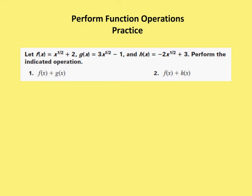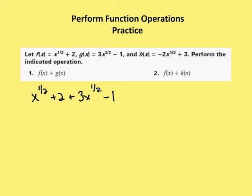Now we're going to use addition as one of the operations, and then we'll get into composition of functions in just a bit. So f of x plus g of x, where f of x is equal to x to the 1 half plus 2, and g of x is equal to 3x to the 1 half minus 1. I write down f of x: x to the 1 half plus 2, and then I add 3x to the 1 half minus 1, which gives me 4x to the 1 half — and then plus 2 minus 1 leaves me with plus 1. So my result is 4x to the 1 half plus 1.